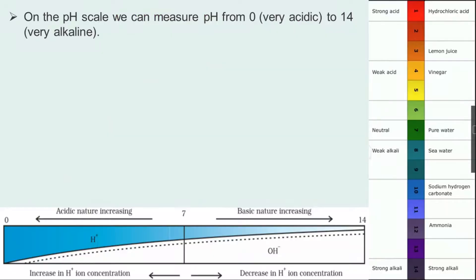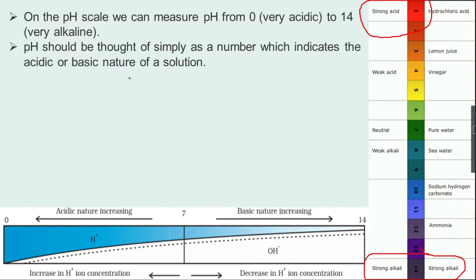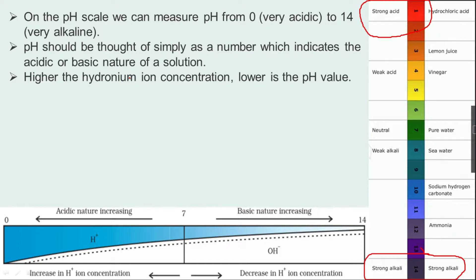On the pH scale we can measure pH from 0, which is very acidic, to 14, which is very alkaline or very basic. As you can see, if the pH is 1 it is a strong acid — very acidic — and if the pH is 14 it is a strong alkali, meaning very basic. pH is simply a number which indicates the acidic or basic nature of the solution. Higher the hydrogen ion concentration, lower is the pH value: more H+ means more acidic, and more acidic means a lower pH value.